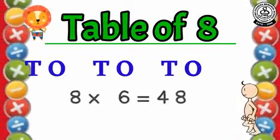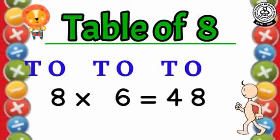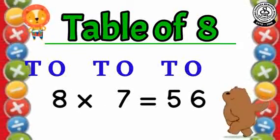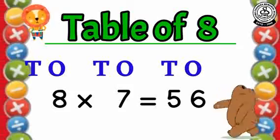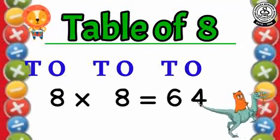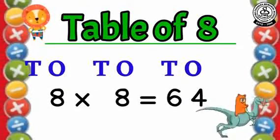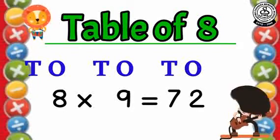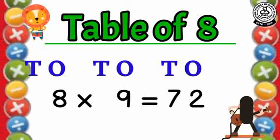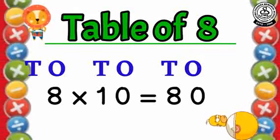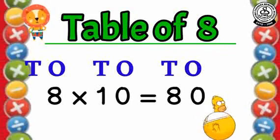Table of 8: 8 6's are 48, 8 7's are 56, 8 8's are 64, 8 9's are 72, 8 10's are 80.